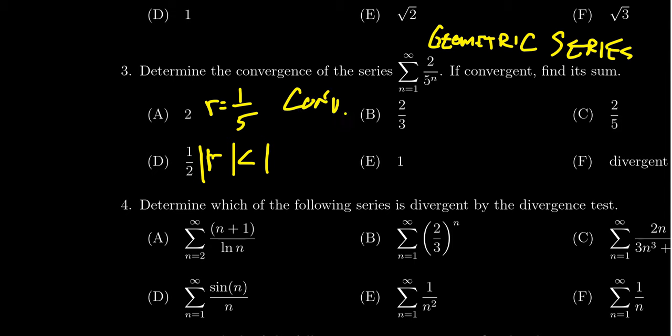By that information right there, we've already determined that F is not the correct answer. We have a convergent geometric series. Well, what does it add up to be?